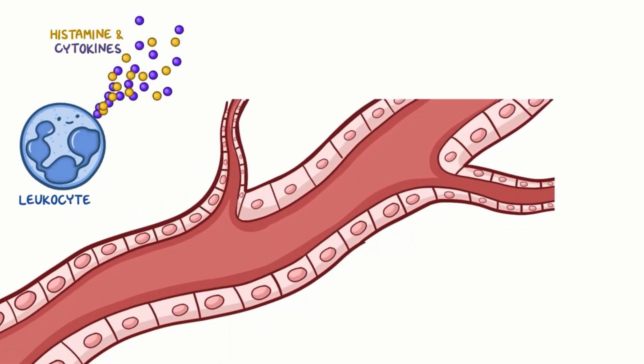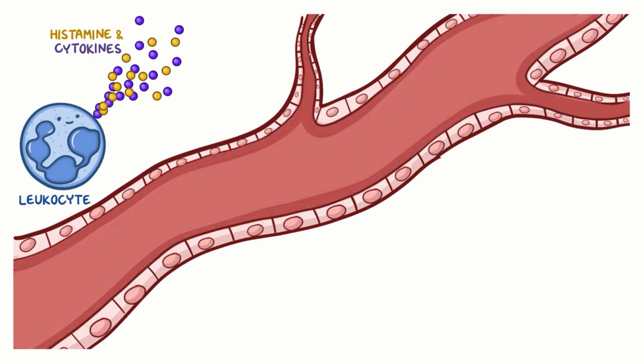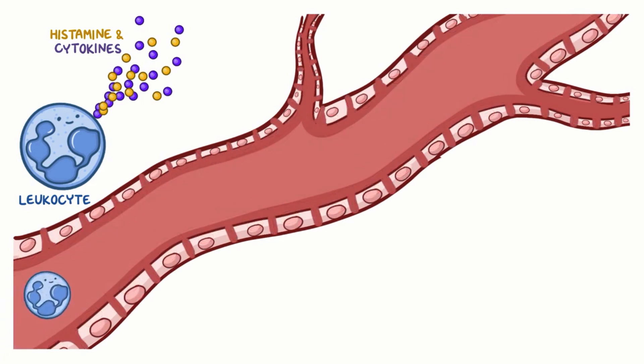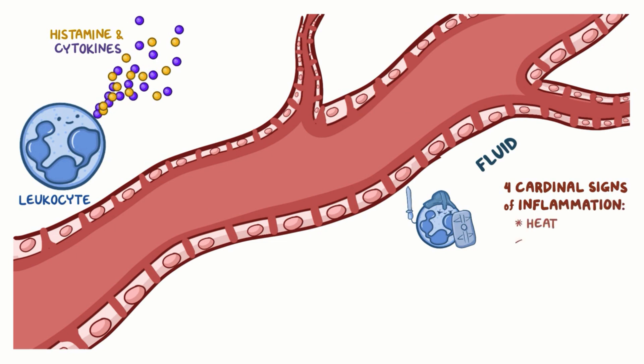Namely, leukocytes found in the affected tissue release inflammatory mediators like histamine and cytokines. This makes blood vessels in the infected zone dilate and become more permeable, allowing more leukocytes and fluid to enter local tissue to fight the infection. This translates into the four cardinal signs of inflammation: heat, pain, redness, and swelling.